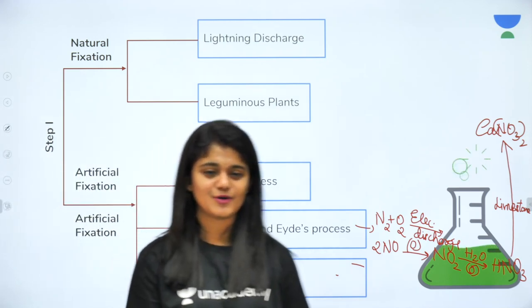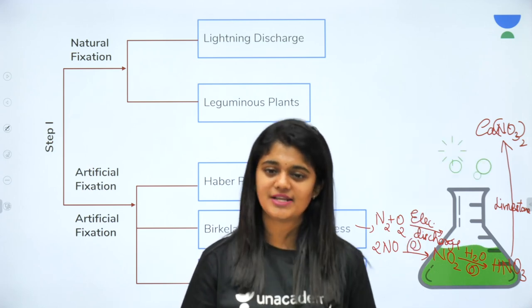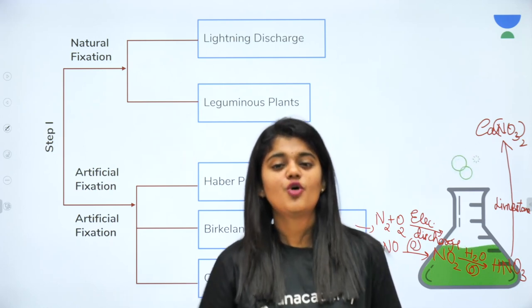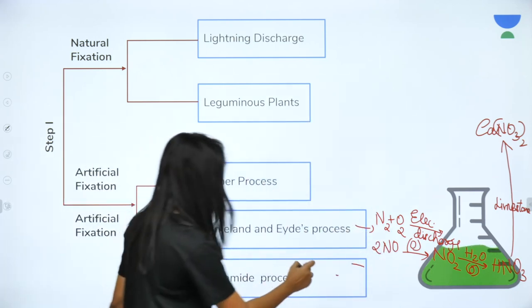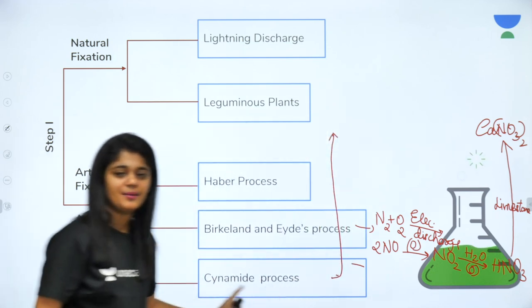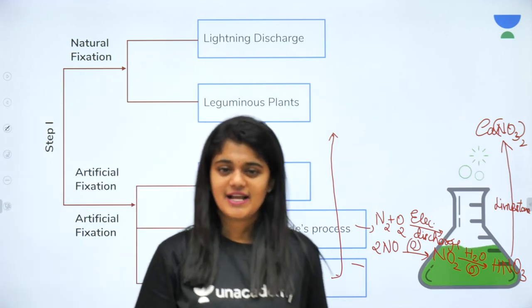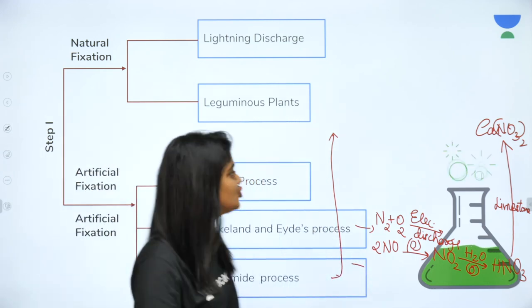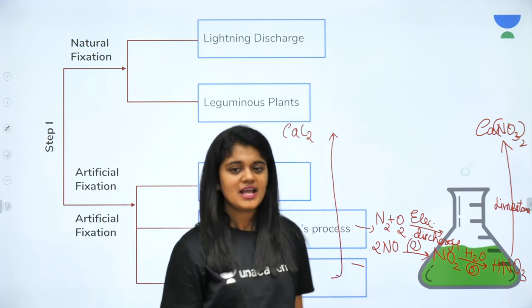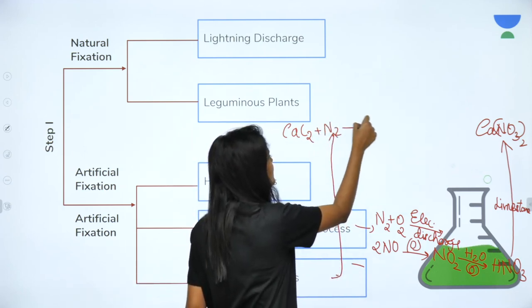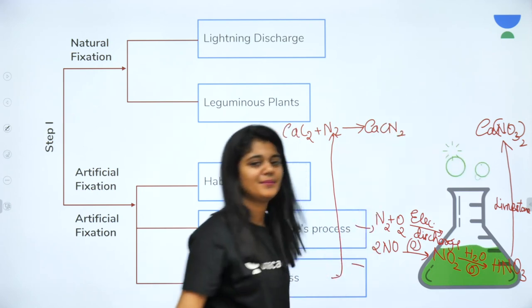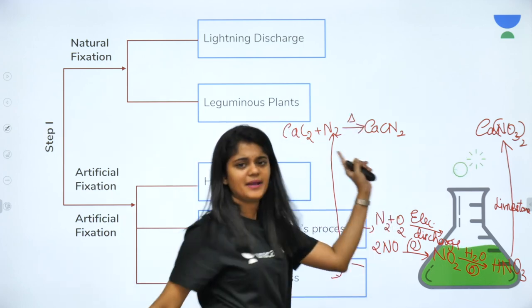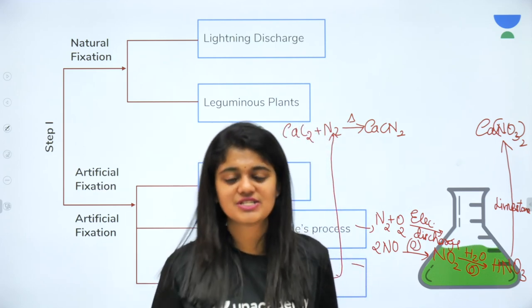Then if nitric acid is treated with limestone, calcium is introduced and you will get calcium nitrate — so it gets converted into soluble nitrates. This method is called the Birkland and Eyde process, and the product is a soluble nitrate. Next, there is the Cyanamide process, in which cyanamide is formed. The starting material is calcium carbide, CaC₂.